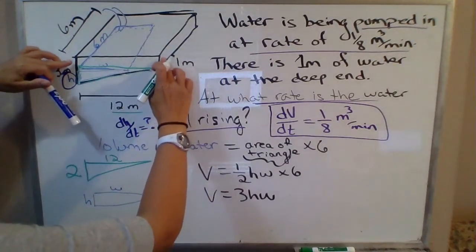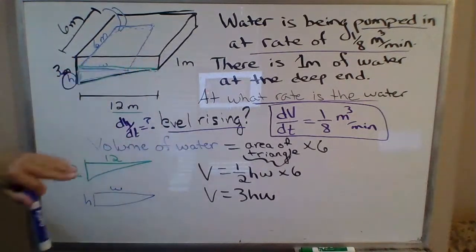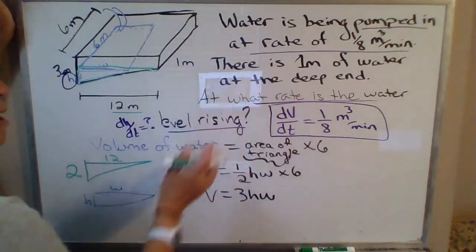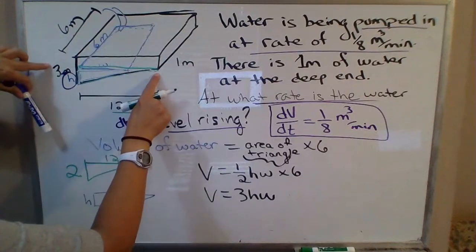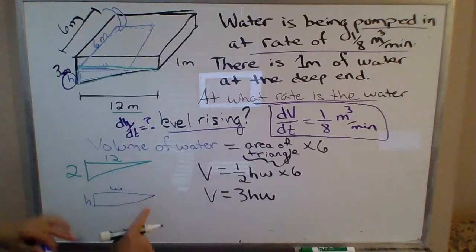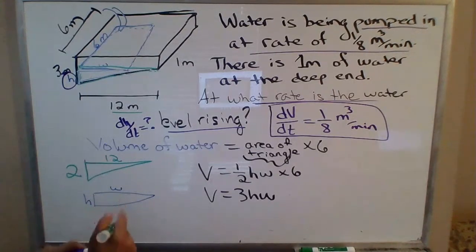You have to have a whole different volume formula once your water level gets above two, then now you're filling this rectangular solid, and that has a whole different formula. But the problem concerns when there's one meter of water at the deep end, so we know we're still within this triangular region. So we don't have to worry about what happens up here. Okay, so if we're taking just the triangular region, then that's two meters on this side, and 12 meters across. That's a similar triangle with the one filled with water, where we called this dimension h, this dimension w.